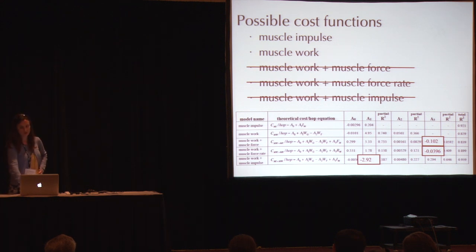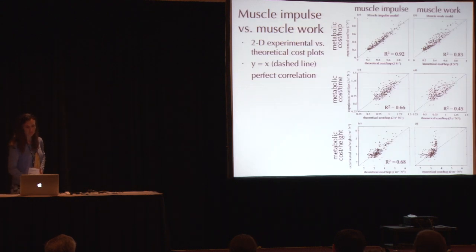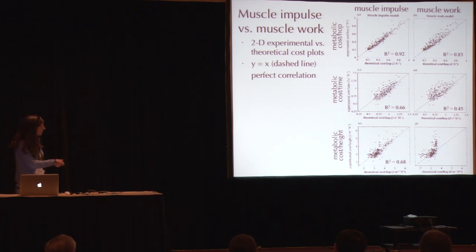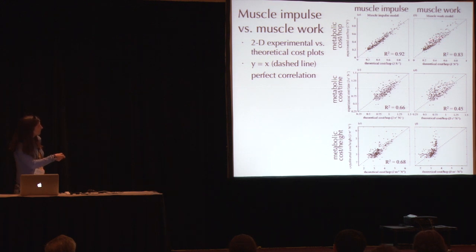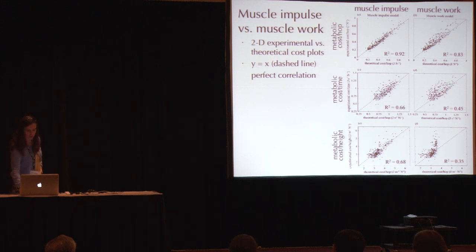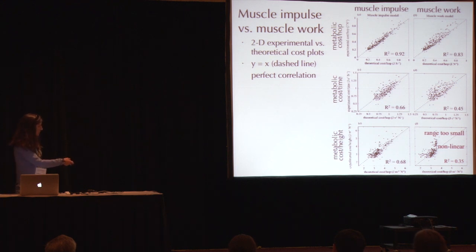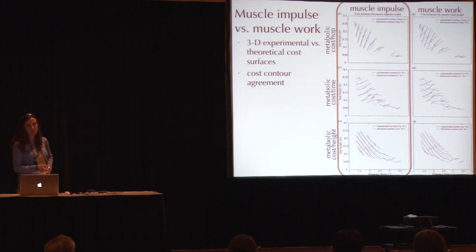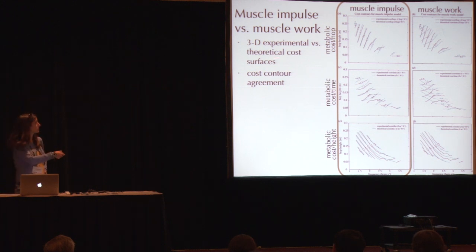Going back to compare muscle impulse and muscle work in more detail: for muscle impulse, we get fairly linear relationships for all three types of metabolic cost. For muscle work, there is a non-linear correlation for the metabolic cost per height case, the correlation is very low, and the range of metabolic costs covered by the data is too small. The cost contour comparison also shows qualitatively that muscle impulse does a better job of explaining the data.